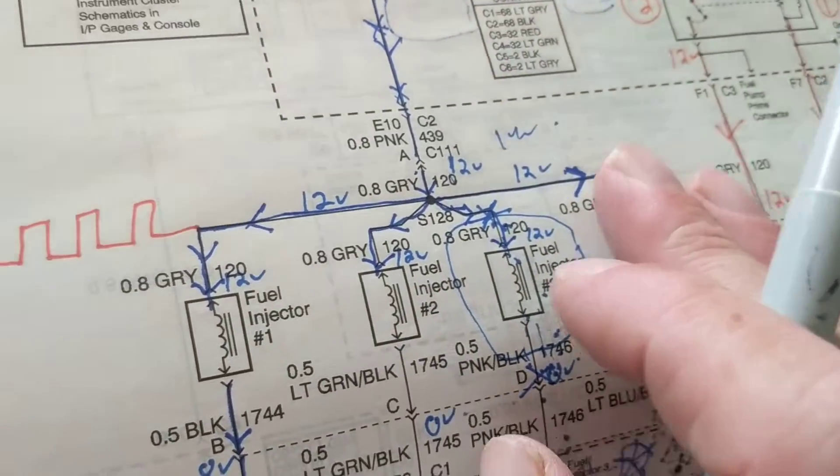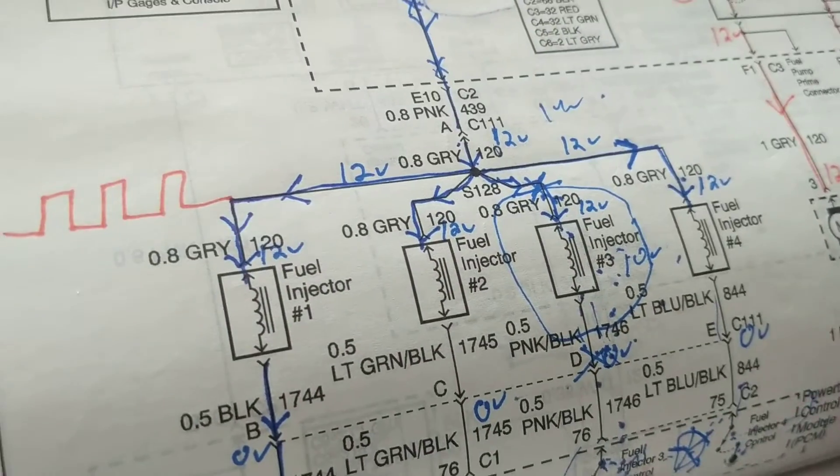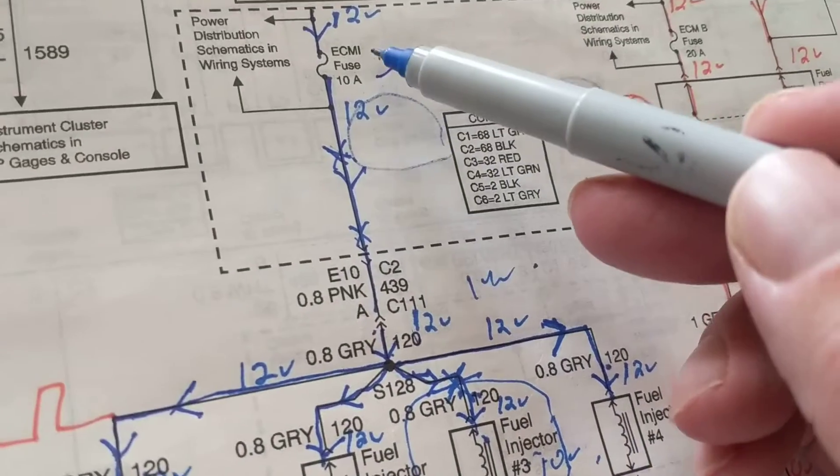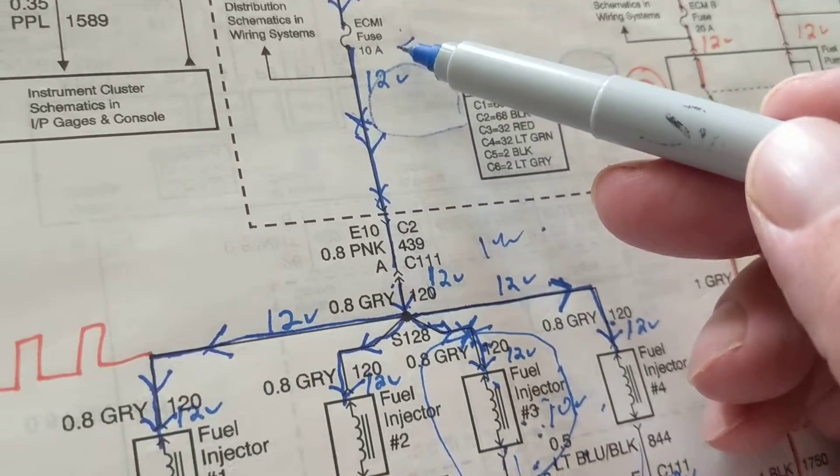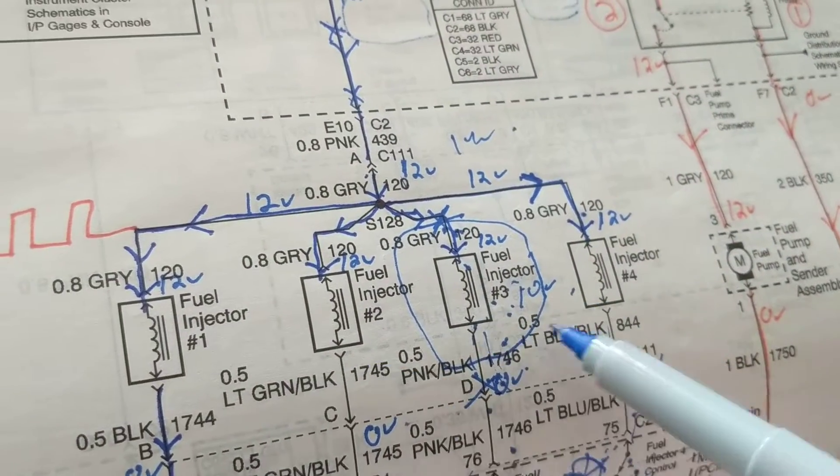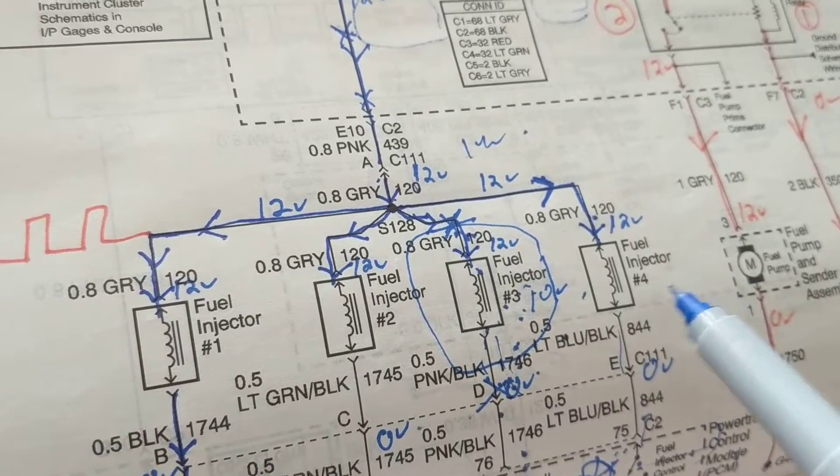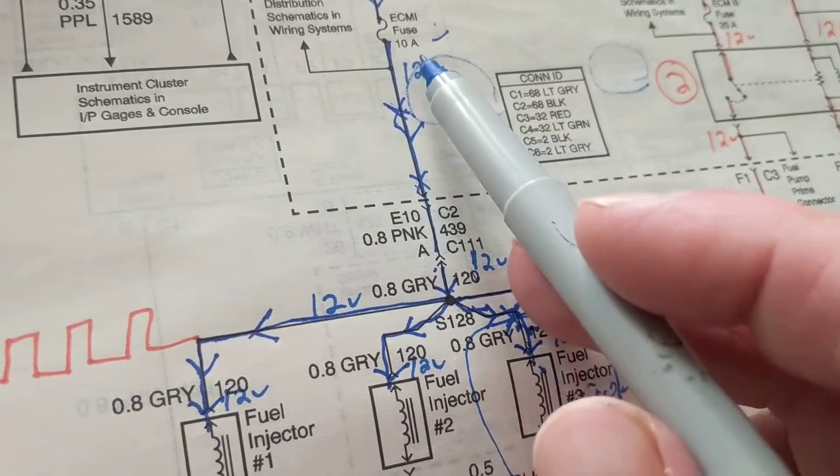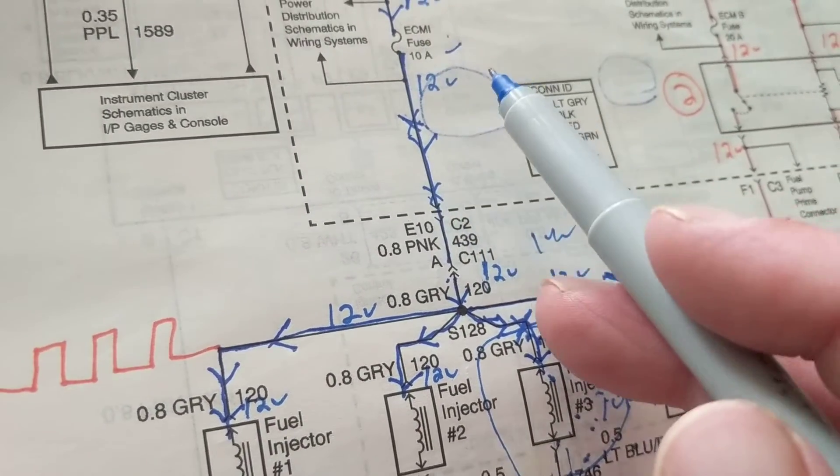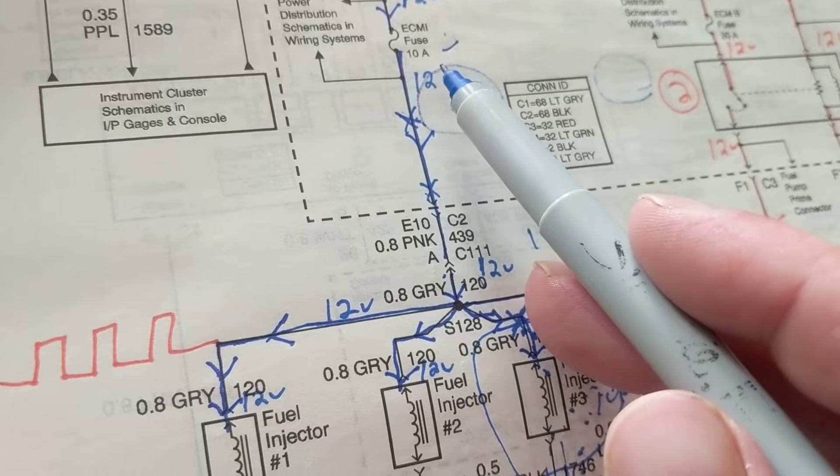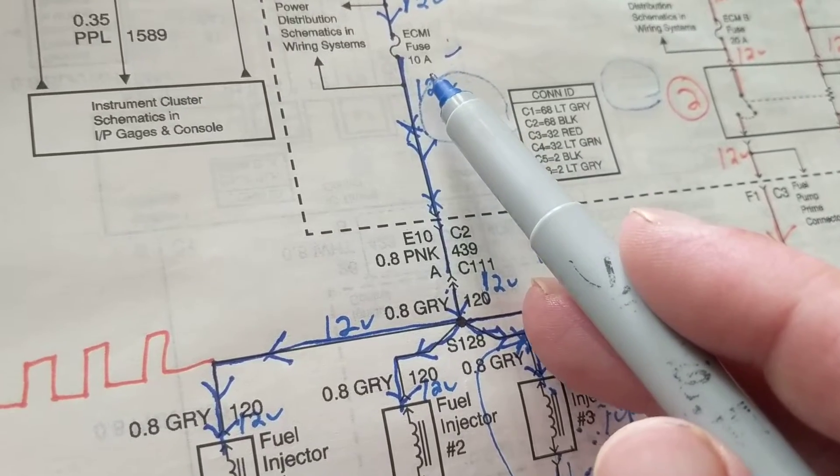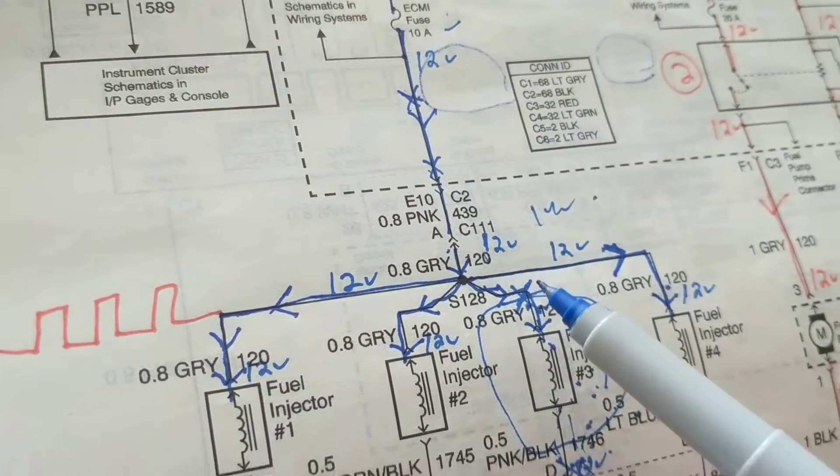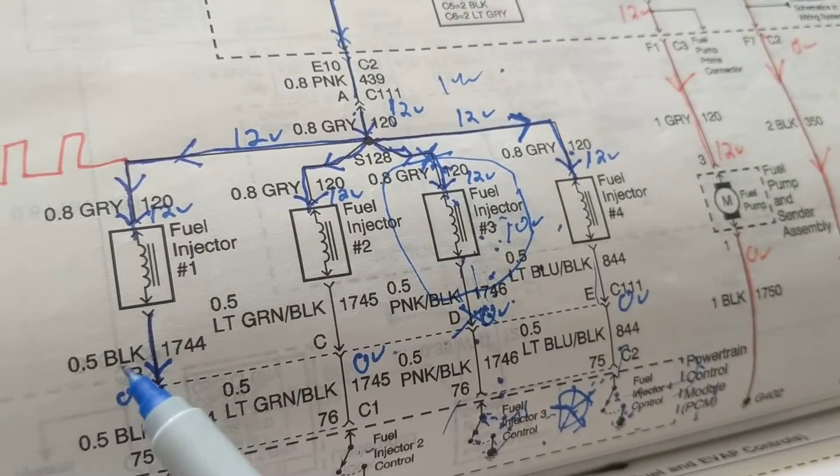How do you know the fuel injectors are working? If you have a scanner, you could do an injector balance test. But look at this - 10 amps divided by four. How do I know how much amps are going through each one? You could say about 70-80% of this fuse is how much current will be flowing. So let's say seven amps, six amps, anywhere from six to eight amps, which means each one is getting about one to two amps.